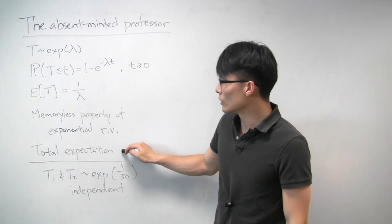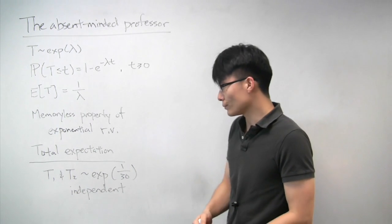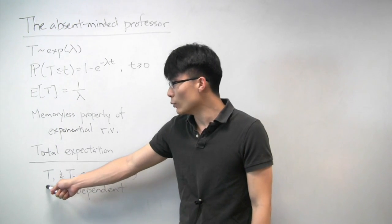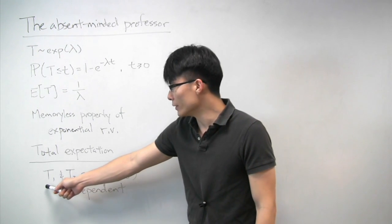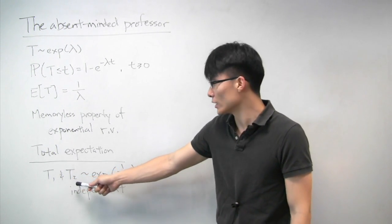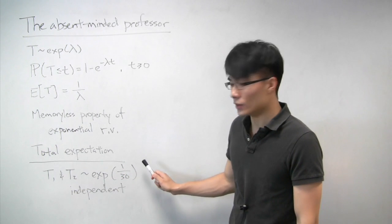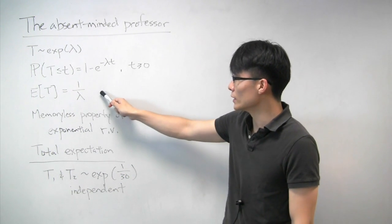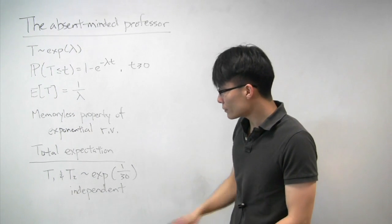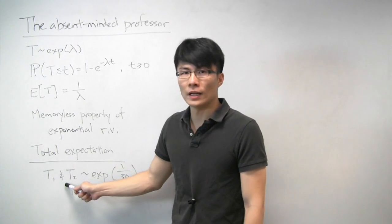The last concept we'll use is total expectation. Let's model this problem with two random variables: let t1 be the time the first student takes in the appointment, and t2 be the time the second student takes. We're told they're both exponential with mean 30 minutes, so lambda equals 1 over 30. Importantly, we're also told they're independent — how long the first person takes is independent of how long the second person takes.